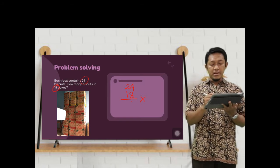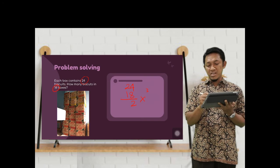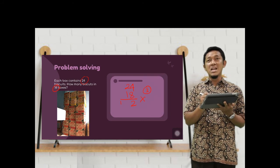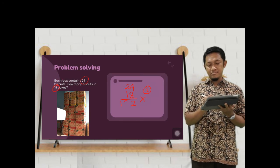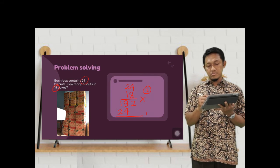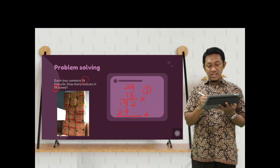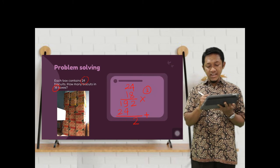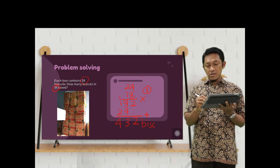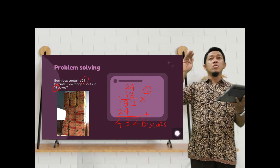So we will find out the total biscuits in the boxes. The trick is the same. We have the same steps. 8 times 4, 4 times 8, what is it? There will be 32. Save the 3. 2 times 8, result is 16 plus 3, so there will be 19. Next, 4 times 1, result is 4. And the last one, 2 times 1 is 2. The last step, we add all of the numbers. 2 plus nothing is 2. 9 plus 4 is 13. And the last one, 1 plus 1 plus 2 is 4. So there are 432 biscuits in the boxes. In the 18 boxes, there are 432 biscuits.